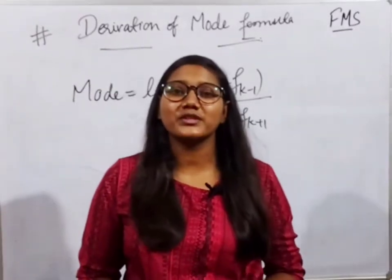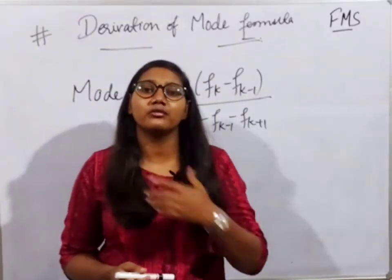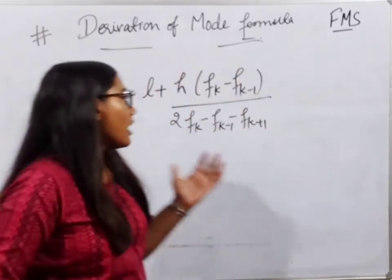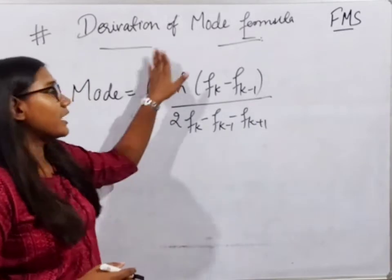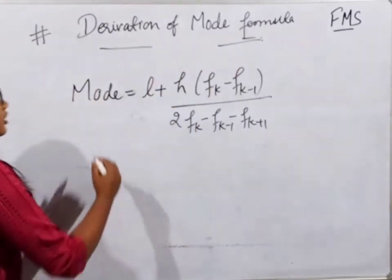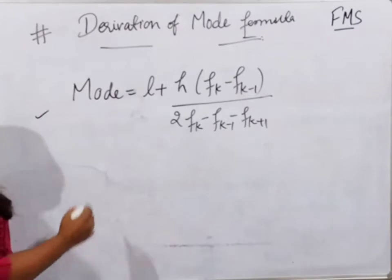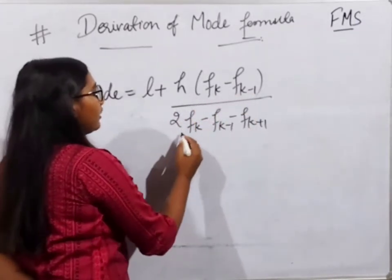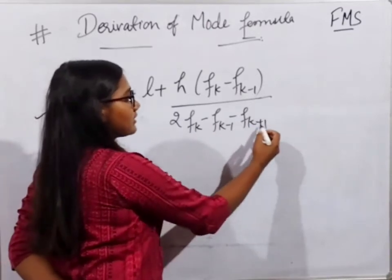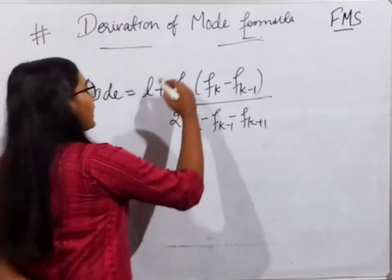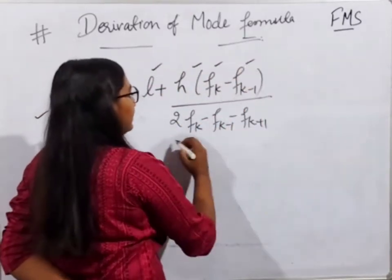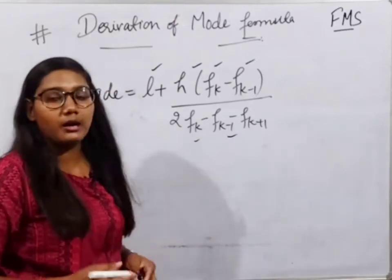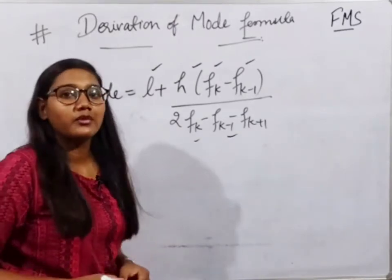Hello guys, good evening. In the last video we completed the mode for continuous group frequency. Now we are going to discuss the derivation of the mode formula. Our formula for continuous distribution is: Mode = L + h(fk - fk-1) / (2fk - fk-1 - fk+1). We have previously discussed the terms L, h, fk-1 in the last video, so let's start the proof.